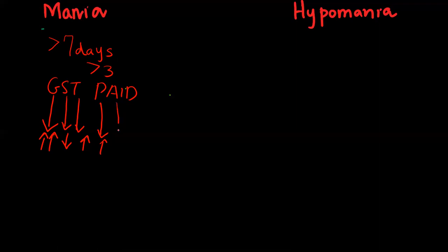A is for activity — there is an increase in goal-directed activity at work or at school. I is for ideas — there is a flight of ideas constantly going on in the patient's mind. D is for distractibility — the patient is very distractible and cannot focus on one task.